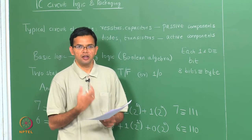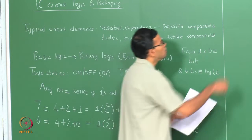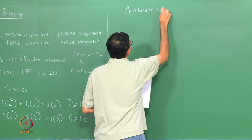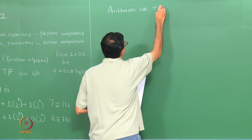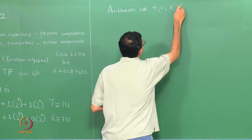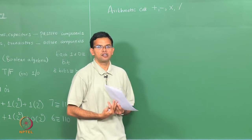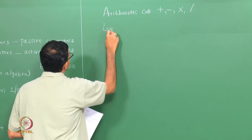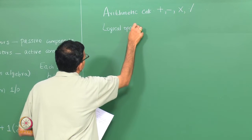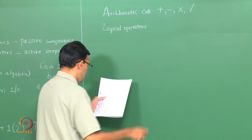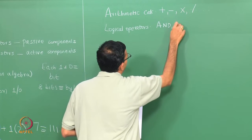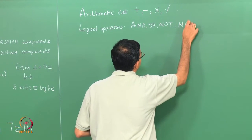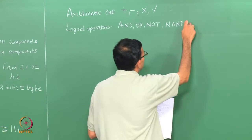Using Boolean algebra you can do both arithmetic calculations and also logical operations. You can do things like addition, subtraction, multiplication, division and so on, and you can also do higher order arithmetic calculations based upon these. You also have various logical operators. Typical logical operators are AND gates, NOT, and then variations like NAND which is NOT AND, and so on.